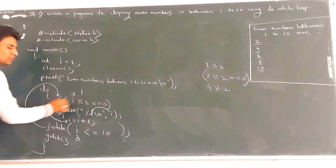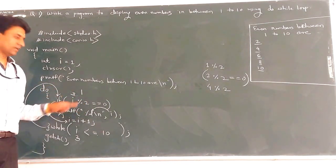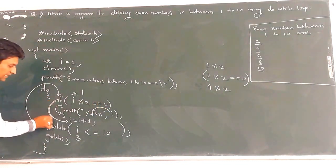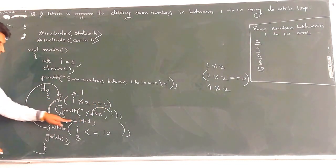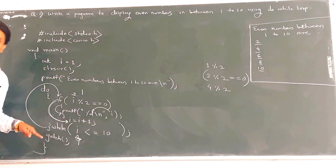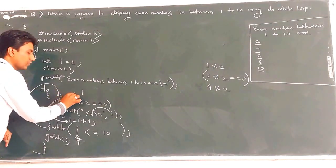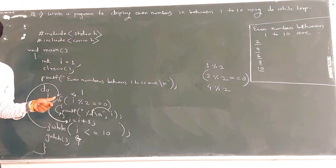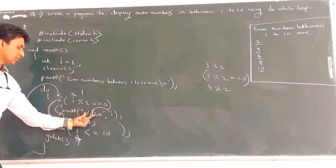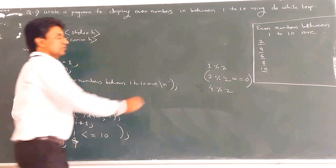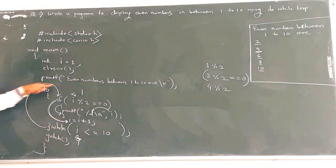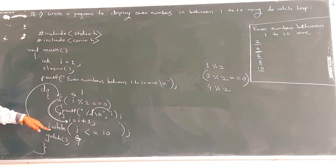Then i++ makes i equal to 4. The while condition: 4 <= 10 is true, loop continues. Now 4 mod 2 gives 0 — condition true. So printf executes and the value 4 gets printed. Similarly, i keeps getting incremented, and each even number is printed while each odd number is skipped.